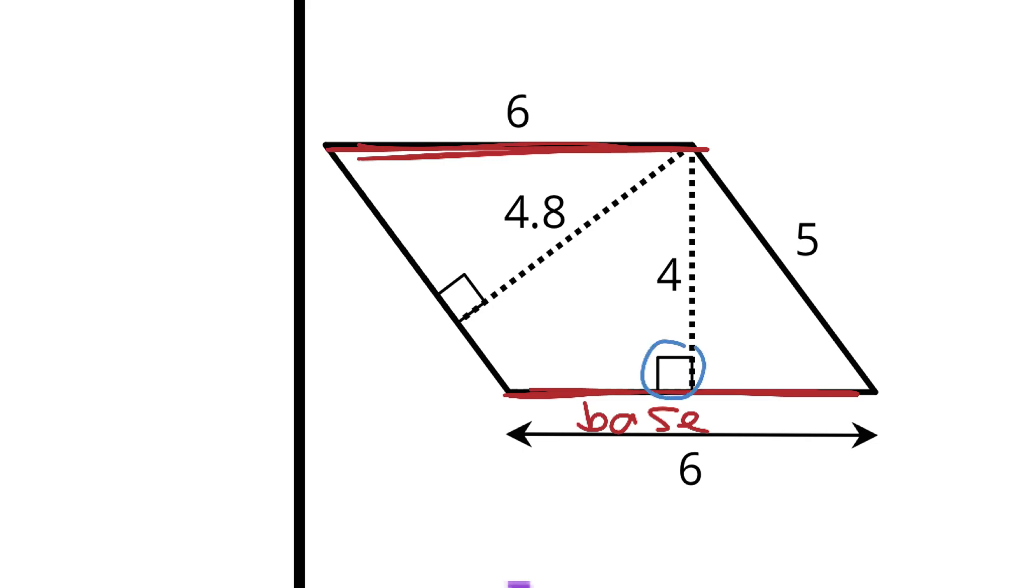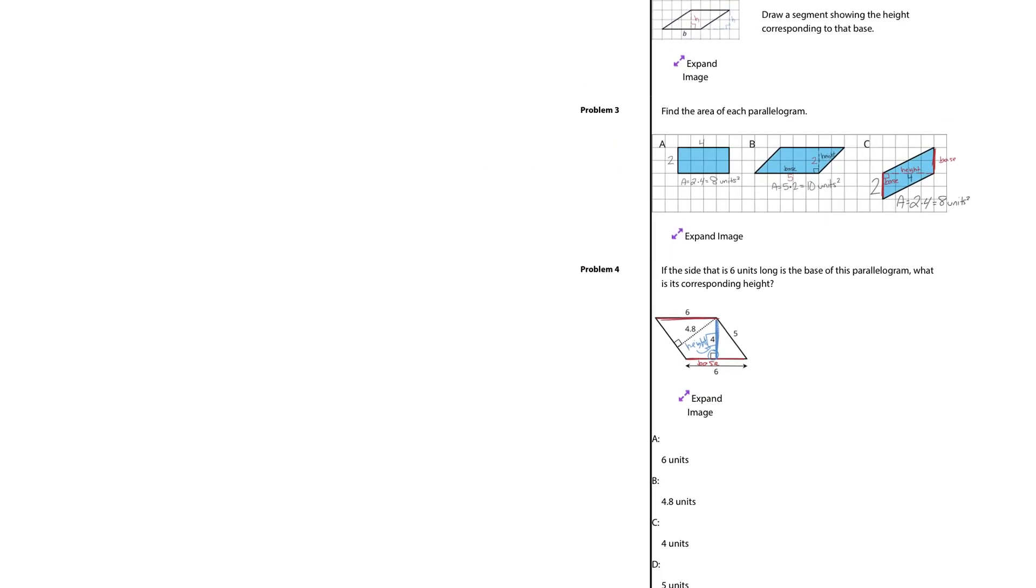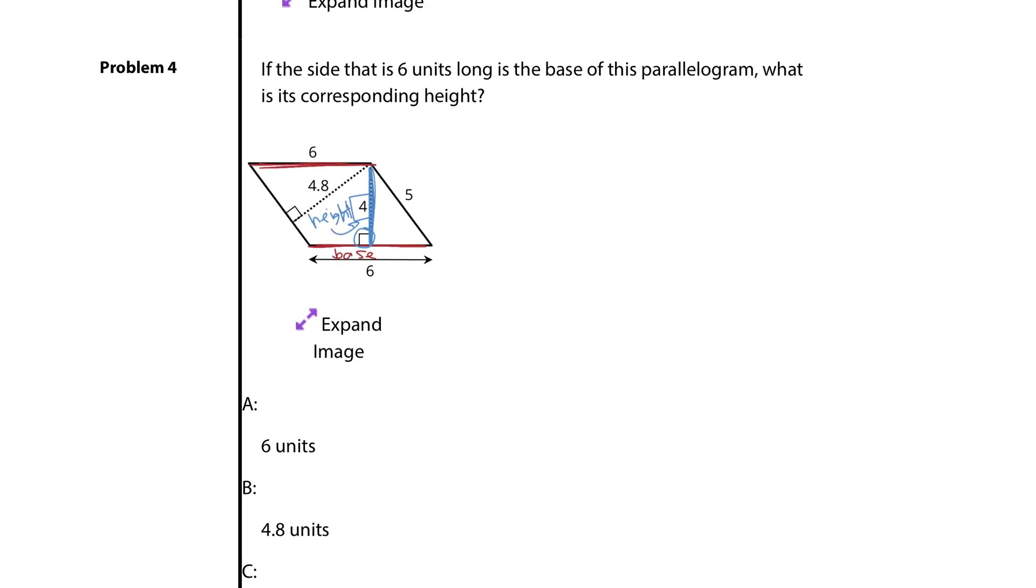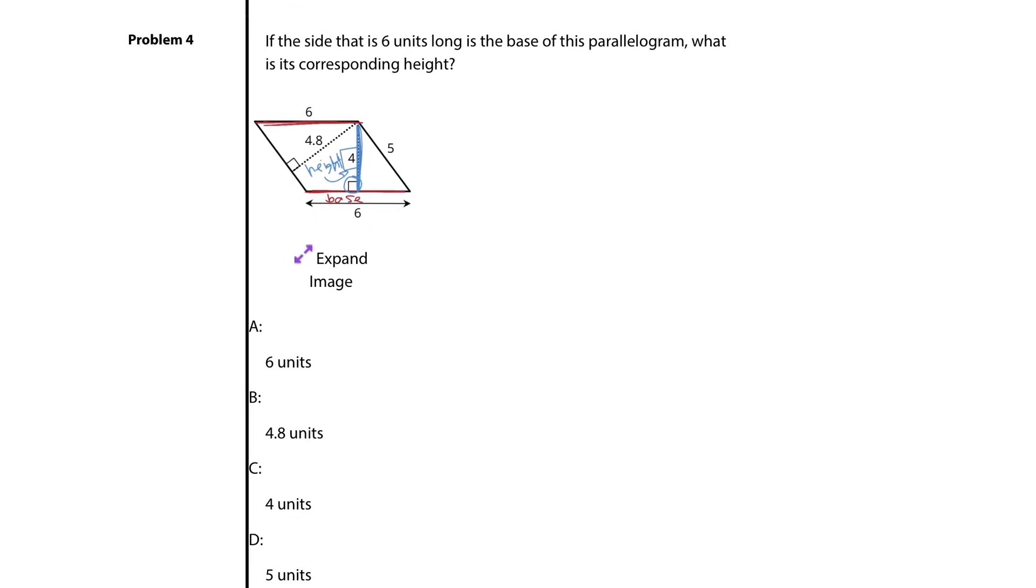Well, I see a right angle here that connects these two bases. And so that must mean my height is 4. And if we look at our multiple choice here, that would be choice C. Our height is 4.